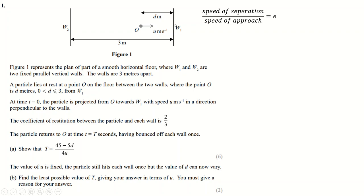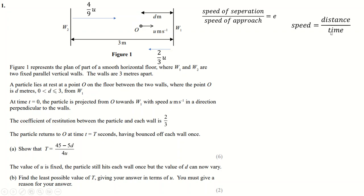The speed of approach to this wall is clearly U. The speed away from it we can call V, giving us V over U equals two-thirds, so V equals two-thirds U. We can do that again over here: when it hits the second wall, the approach speed is two-thirds U, so speed away is V over two-thirds U equals two-thirds, giving four-ninths U. So we have speeds U, two-thirds U, and four-ninths U. Time equals distance over speed.